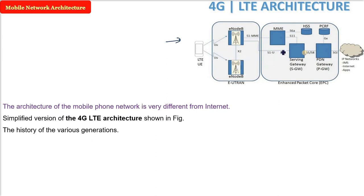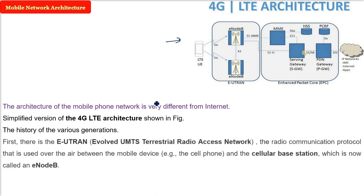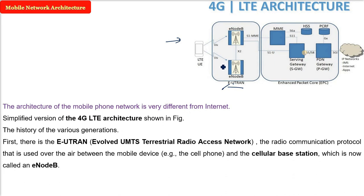First there is the E-UTRAN — Evolved UMTS Terrestrial Radio Access Network. Remember RAN — we will be talking about this Radio Access Network, which is the radio communication protocol used between the mobile device and the network.